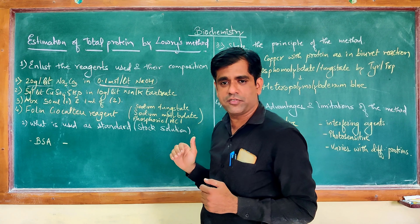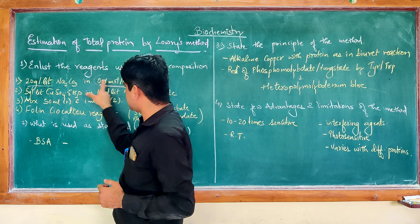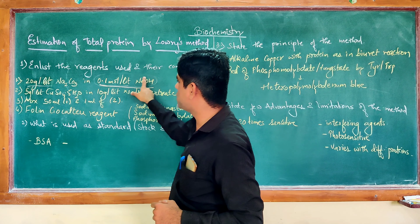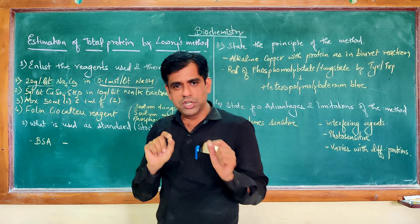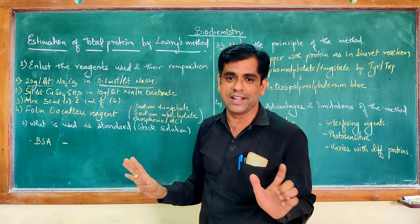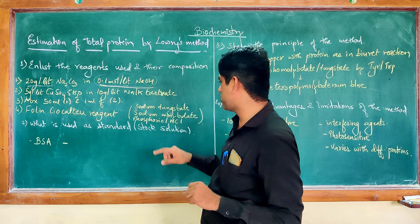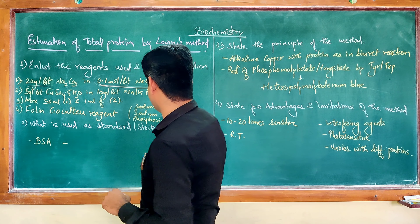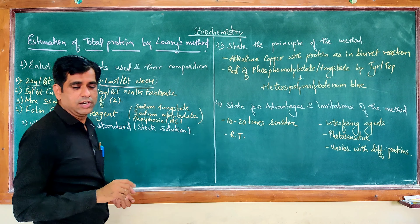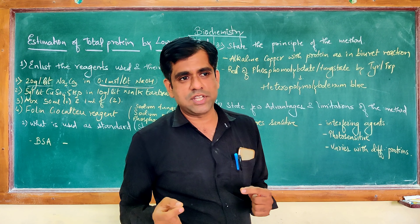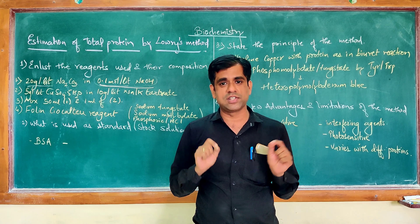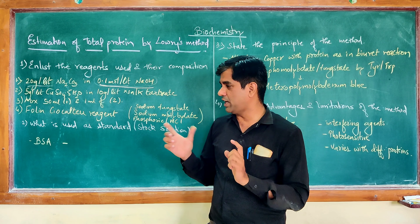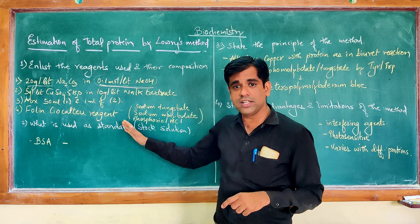To prepare the alkaline copper sulfate working reagent, mix 50 ml of the sodium carbonate-NaOH solution with 1 ml of the copper sulfate-tartrate solution (or 100 ml to 2 ml proportionally). This gives your alkaline copper sulfate reagent. The Folin-Ciocalteau reagent is commercially available and contains sodium tungstate and sodium molybdate in phosphoric acid and hydrochloric acid. It is typically diluted 1:1 with water before use — so for 10 ml of working FC reagent, take 5 ml of commercial reagent and 5 ml of water. Prepare all reagents freshly.